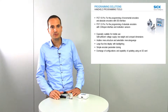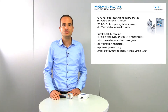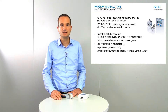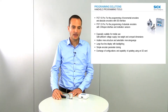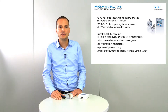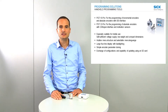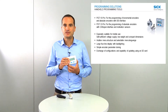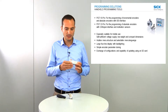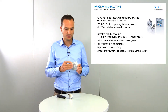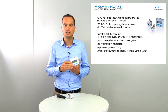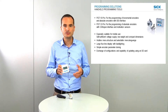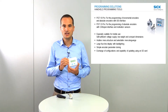The first programming possibility is our handheld programming tools. We have two different tools: the PGT10 Pro for the programming of incremental encoders and absolute encoders with SSI interface, and the PGT12 Pro for the programming of absolute encoders with CANopen interface and inclination sensors. Both look nearly the same — a pocket-sized programming tool. The encoder is connected via adapter cable or a terminal box to the programming tool, and you can program the encoders immediately without installation of external software on a PC.